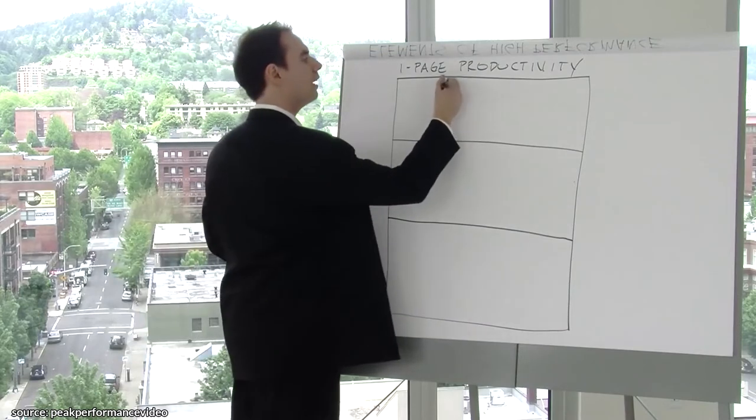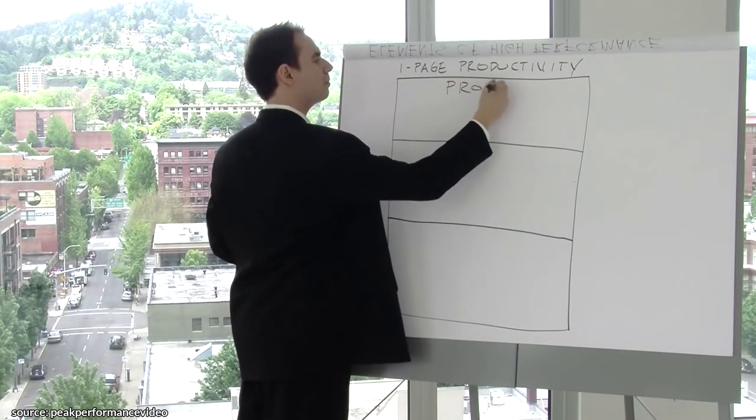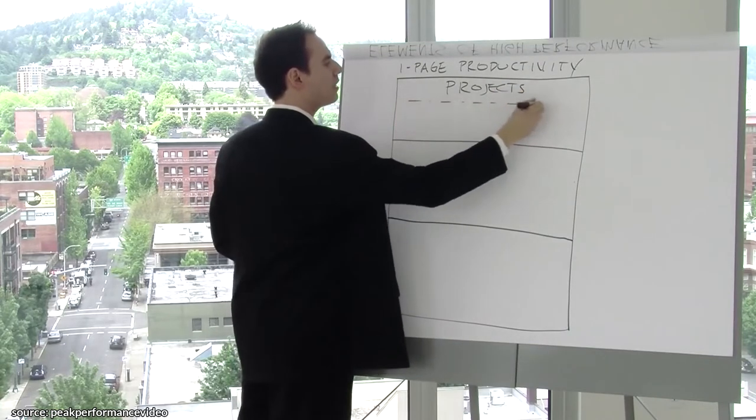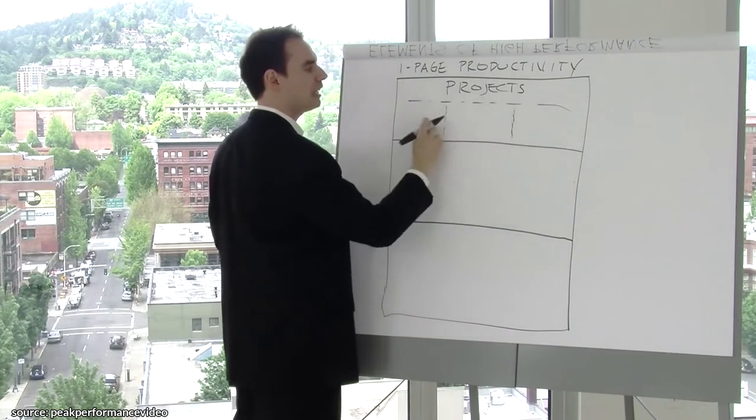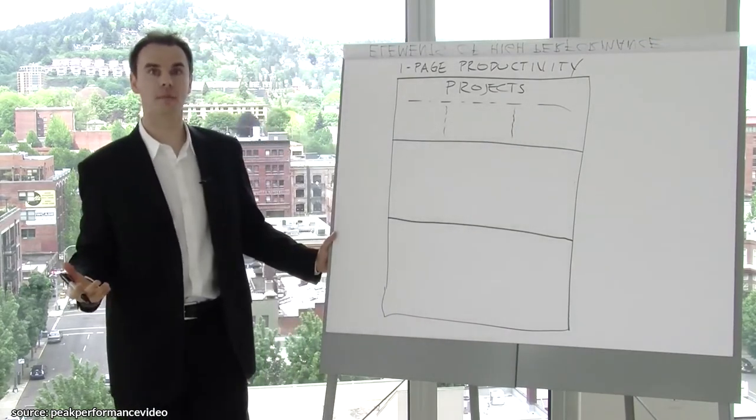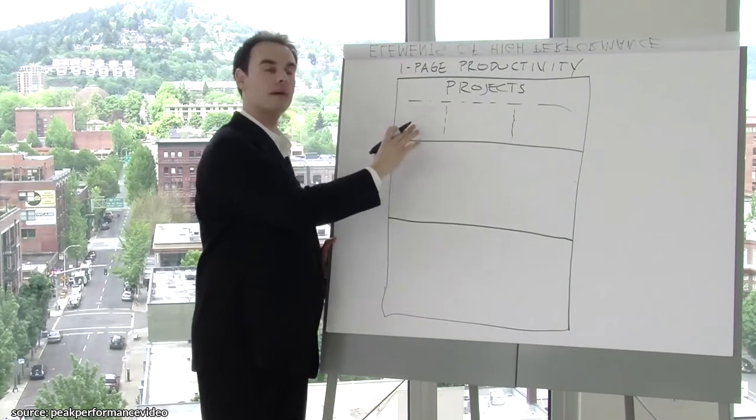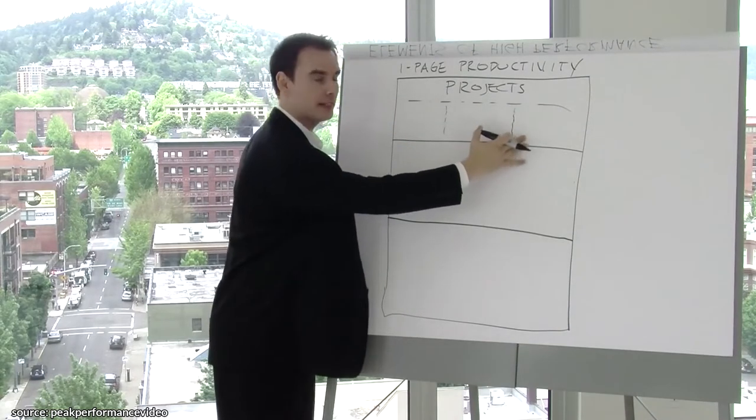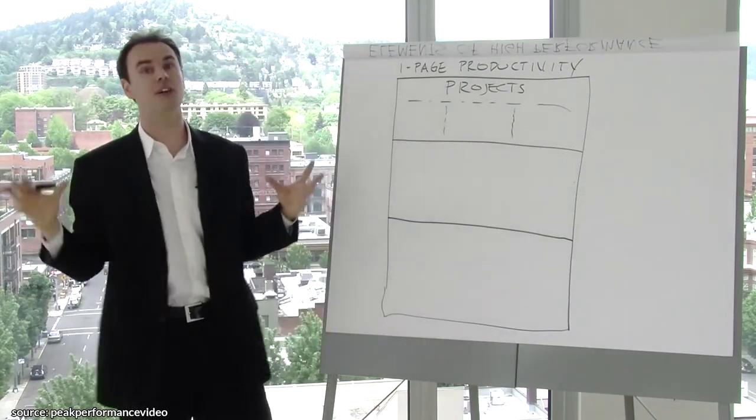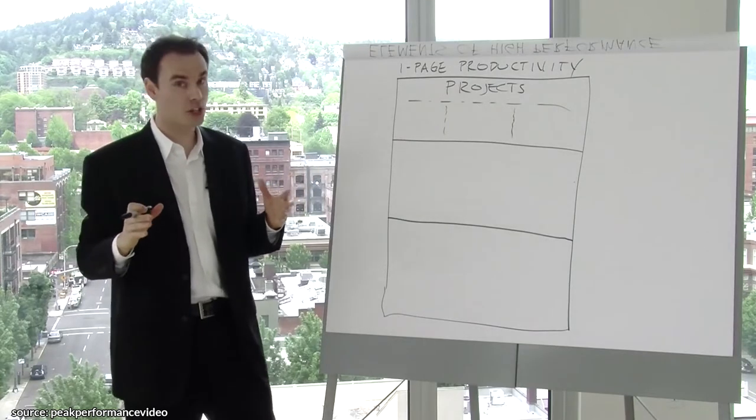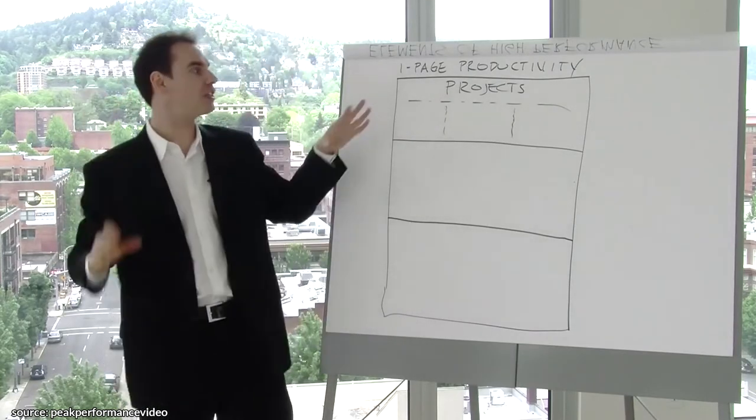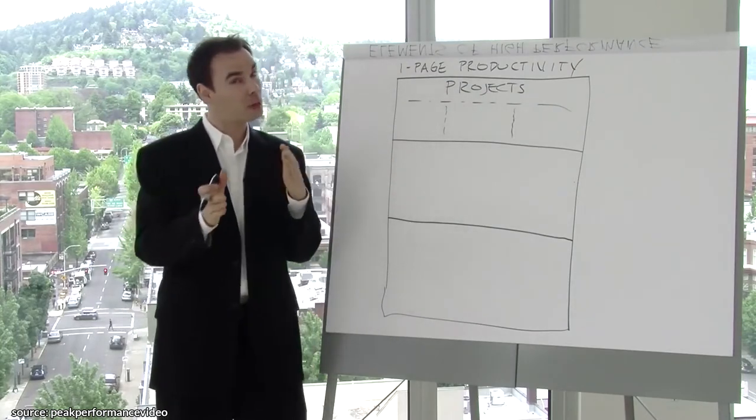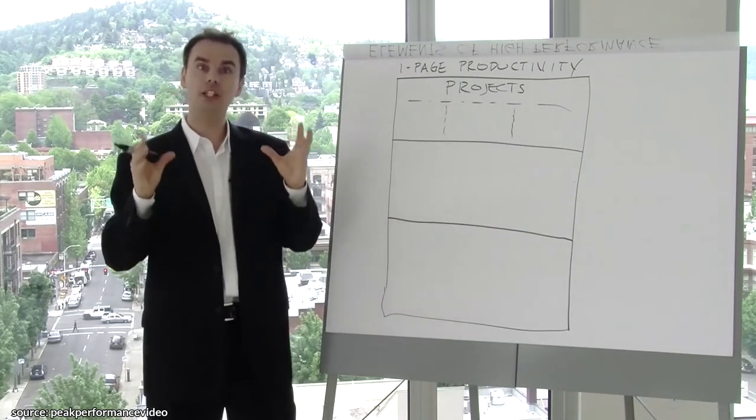The first element is major projects. These major projects, any given person probably has like three big buckets of projects that they're working on. So I might be working on writing a new book. I might be working on doing a new seminar. I might be working on reinvigorating my online marketing. Those are big bucket projects that aren't necessarily the priorities for the day. These are the big vision. These connect me to what are the big things I'm doing. And any given person, if they're well organized, they're probably only working on three, maybe five main projects.